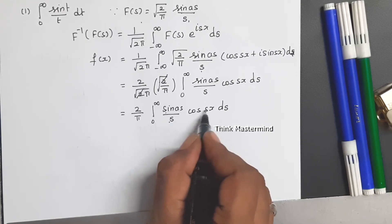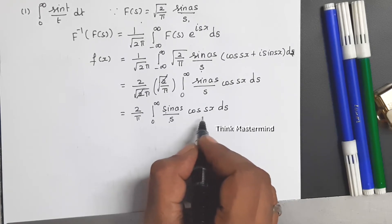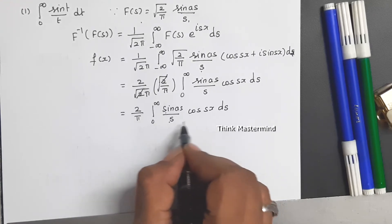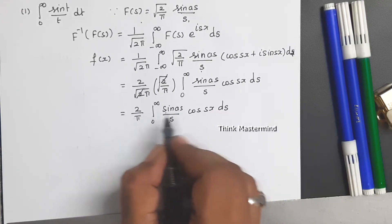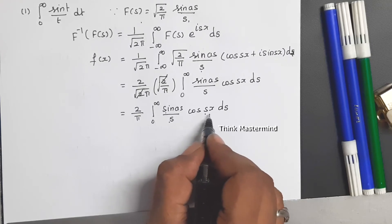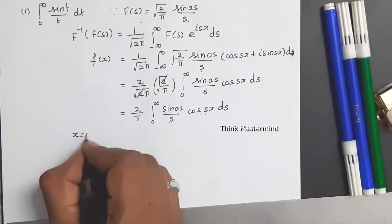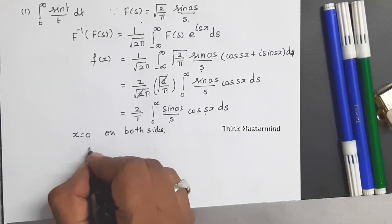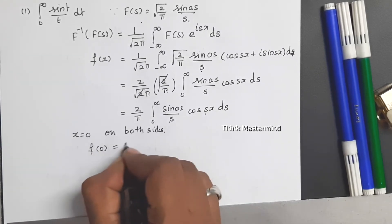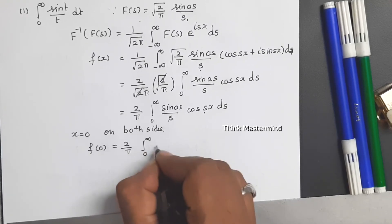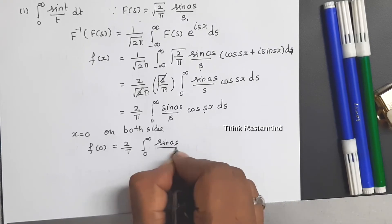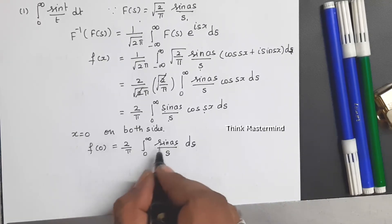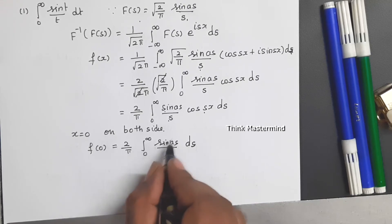Setting s = 0 would make the integral undefined, so instead we substitute x = 0 on both sides. On the left side we get f(0), and on the right side cos(0) = 1, giving f(0) = 2/π times the integral from 0 to infinity of sin(as)/s ds.